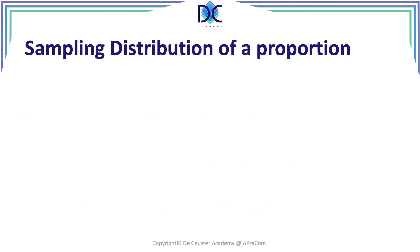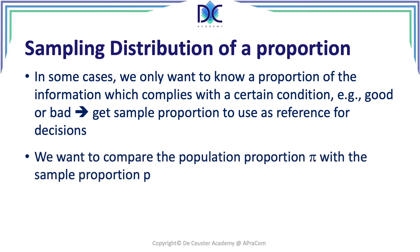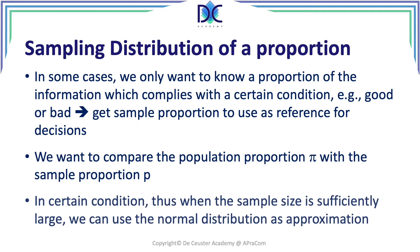When we look at proportions and we want to look at the sampling distribution, we also want to know the proportion of the information which complies with a certain condition — for example, good or bad, yes or no. We want to get a sample proportion to use as reference for decisions. We want to compare the population proportion pi with a sample proportion p, and in certain conditions, when the sample size is sufficiently large, we can use the normal distribution as an approximation.